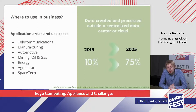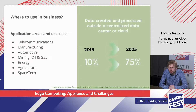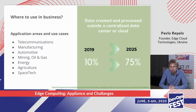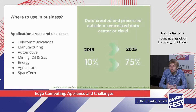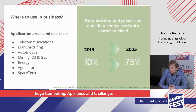Let's look at some examples of where to use edge computing in business. Traditionally there are a number of industries nominated for using these solutions, and they are already utilizing this quite a lot: telecommunications, telecom edge, manufacturing, automotive, mining, oil and gas, energy — very soon I expect our energy grids will be managed by this approach — especially agriculture, and even space tech, which is kind of hype right now. This industry is supposed to grow significantly. According to Gartner figures, if right now about 10% is processed on edge, by 2025 we are expecting 75%. So there will be a lot of work to do in this area.